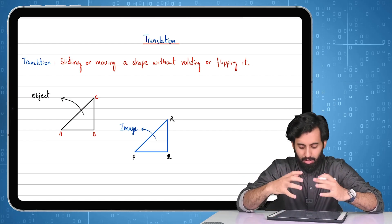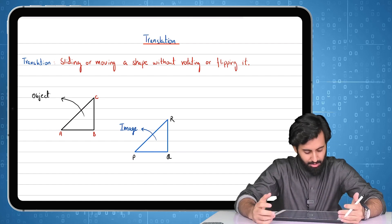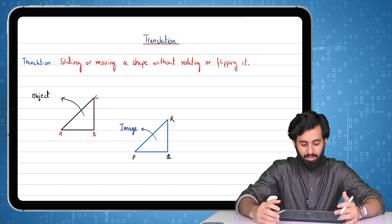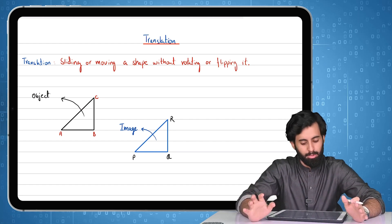So let's further understand this with the help of this illustration here. You can see that we have an object ABC and we have the image PQR. You can see that nothing has changed except for the position.